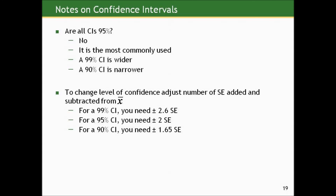Are all confidence intervals 95%? Certainly not. It's the most commonly used, but you could create a 99% or a 90%. A 99% will be wider than a 95%; a 90% will be narrower. To change the level of confidence, you adjust the number of standard errors added and subtracted to the sample mean. For a 99% confidence interval you need plus or minus 2.6 standard errors; for 95% you need plus or minus 2; and for 90% you need plus or minus 1.65.